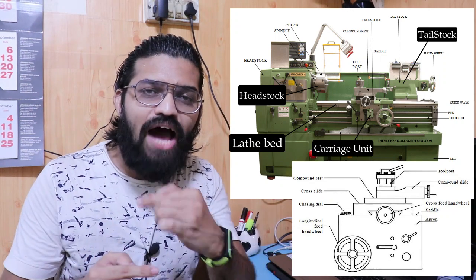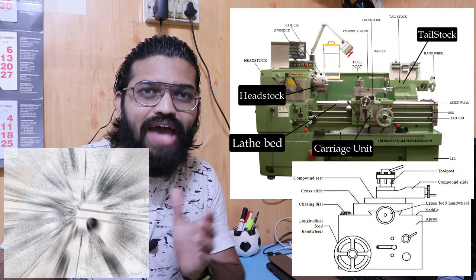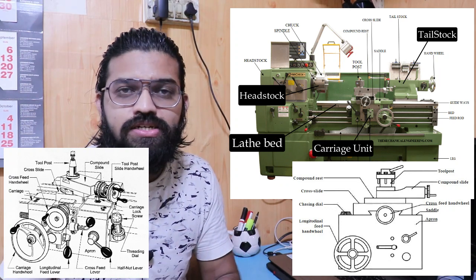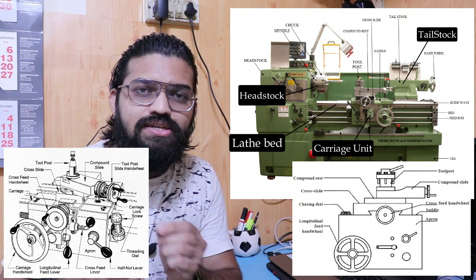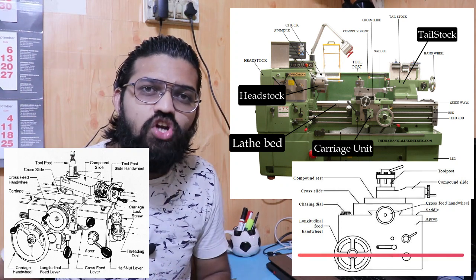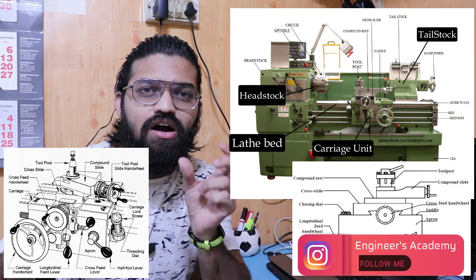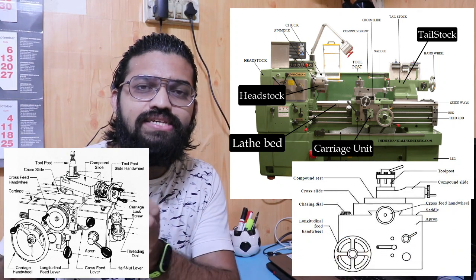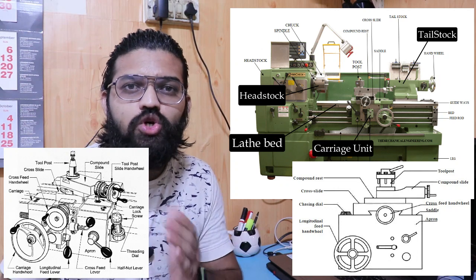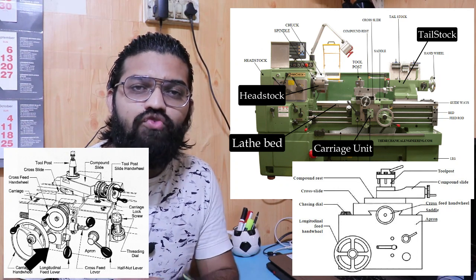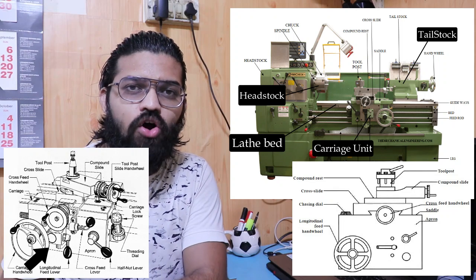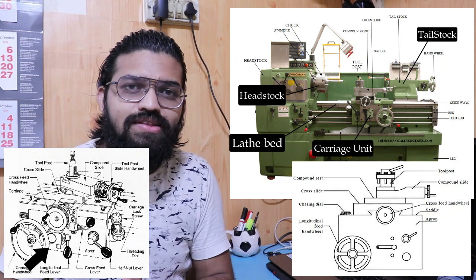Upon the cross slide there is the compound rest, and on the compound rest there is the compound slide. This compound slide has an angular notation to carry out angular taper-turning operations — you can easily take angular cuts on the lathe machine. On that compound slide the tool post is mounted; the main function of the tool post is to secure and hold the single-point cutting tool rigidly. At the front side you can see levers and wheels to move the carriage towards or away from the headstock.